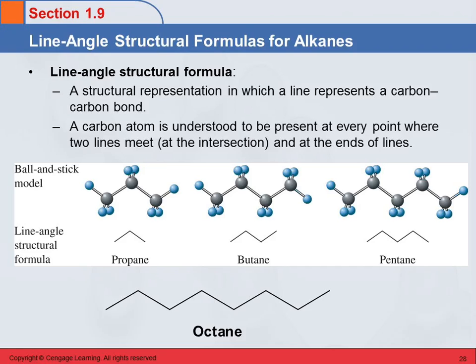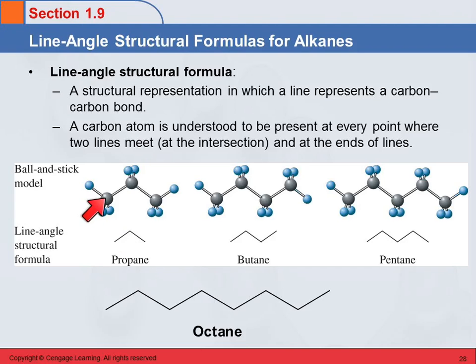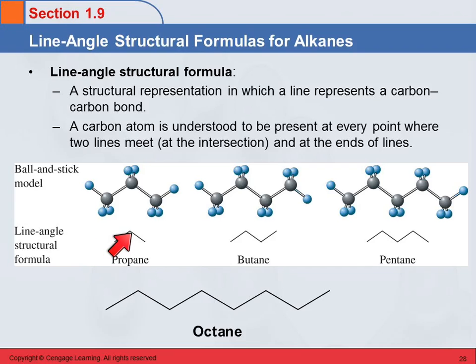The nice thing about organic chemistry is there's a lot of straightforward, this-is-always-how-it-is things. In the line-angle structural formula, we use a line to represent a carbon-carbon bond. At the end of this line is one carbon, at the other end is another carbon, and here's another carbon-carbon bond — both of these bonds go to the same carbon at the point.